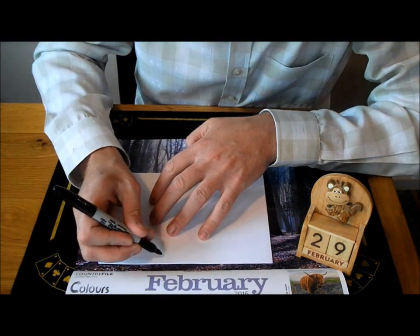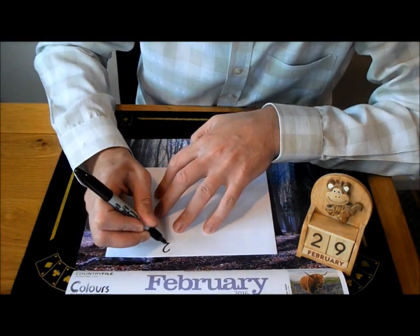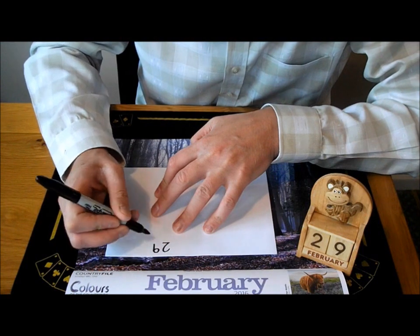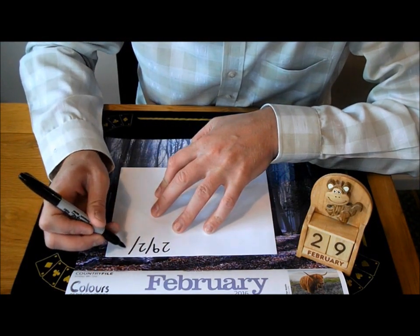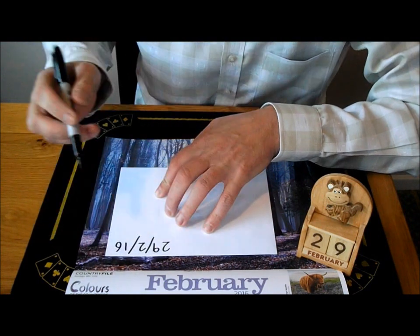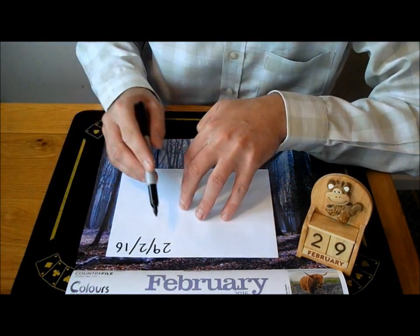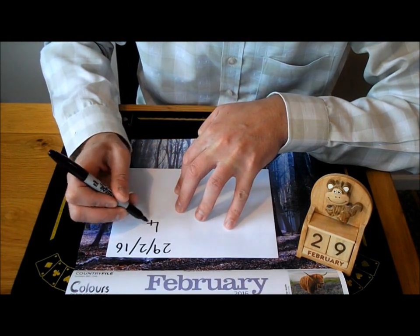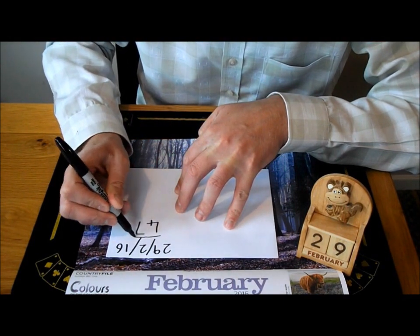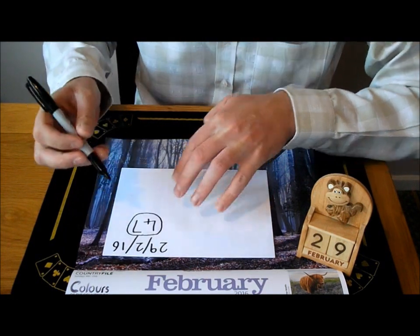So today's date is the 29th of the 2nd, 16. Now some of you may put that in a different order, but whichever order you put it in, if you add them all up, 29 plus 2 plus 16, it's 47. And 47 is today's magical number.